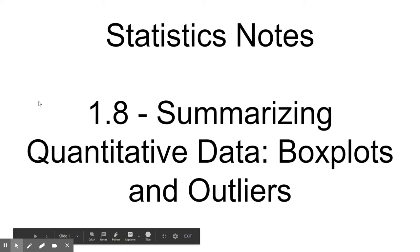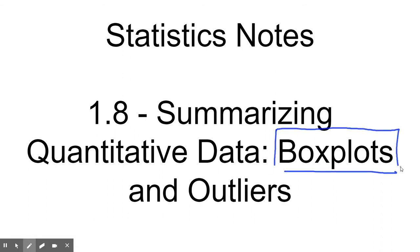All right, so we're doing 1-8 here. Again, another quantitative data section. We're looking at box plots and outliers. Box plots are what you might refer to as box and whisker plots. We're going to focus more on outliers and actually how to determine if something is an outlier versus just saying that looks less than most of the data or greater than most of the data, so I think it's an outlier.